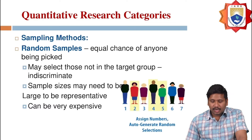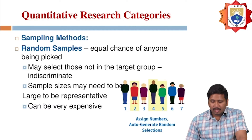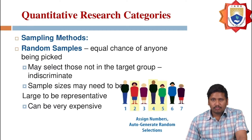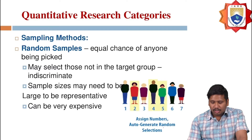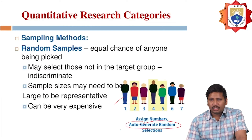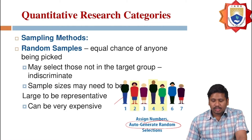Some sampling methods for quantitative research include random samples, where there is an equal chance of anyone being picked. Samples may also select those not in the target group and may need to be large to be representative, making this method very expensive. By assigning numbers using random generation, we can generate a sequence for individuals.